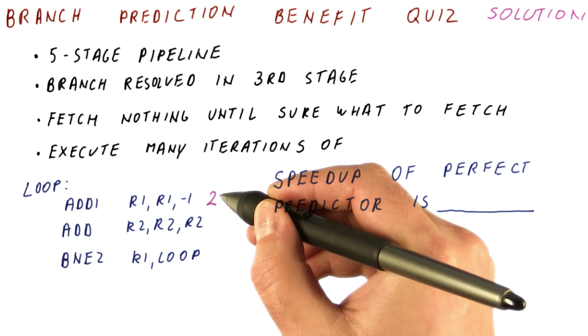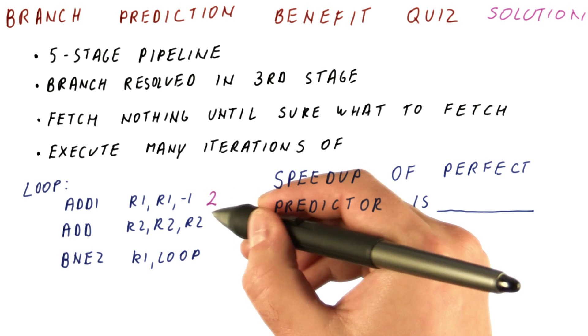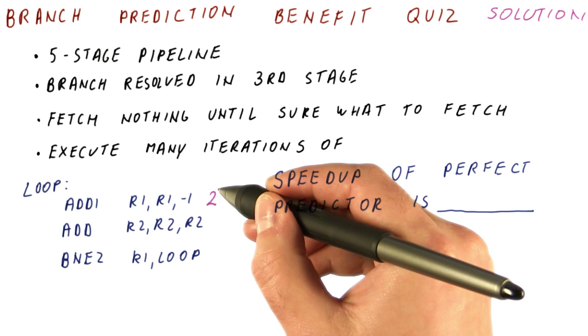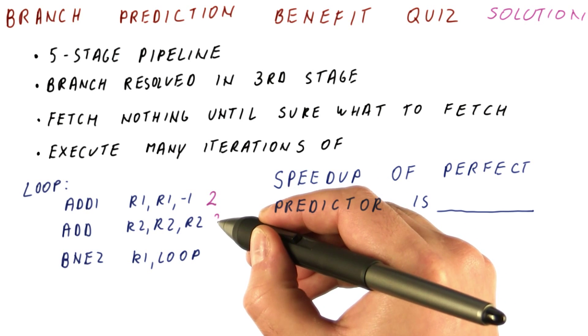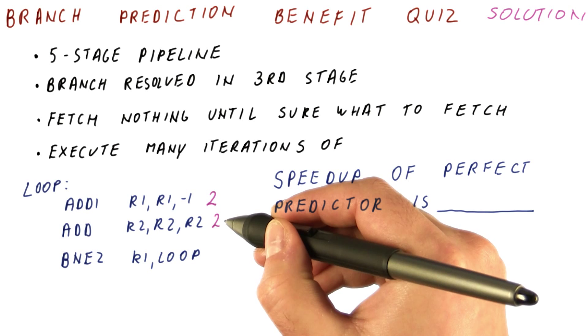So actually, the adi costs us two cycles: one to fetch it, and then there is a pipeline bubble until we can decode it. Similarly, the ad costs us two cycles—one to fetch it, one to be sure that it's not a branch.